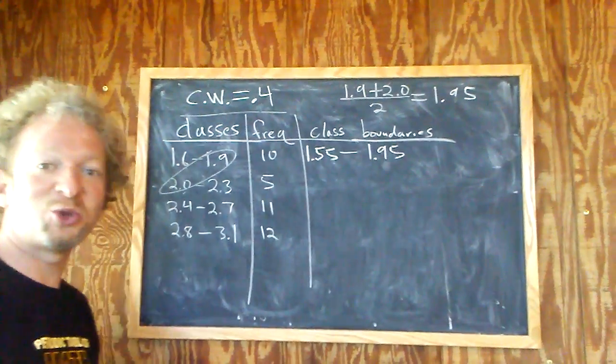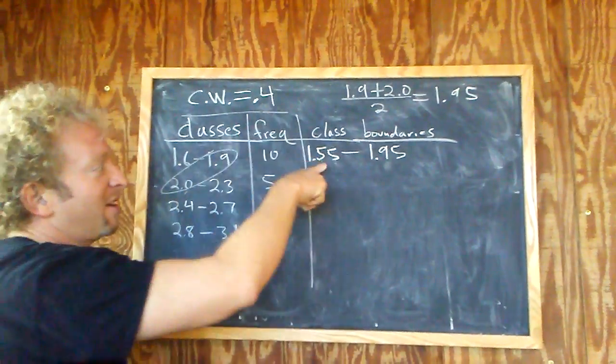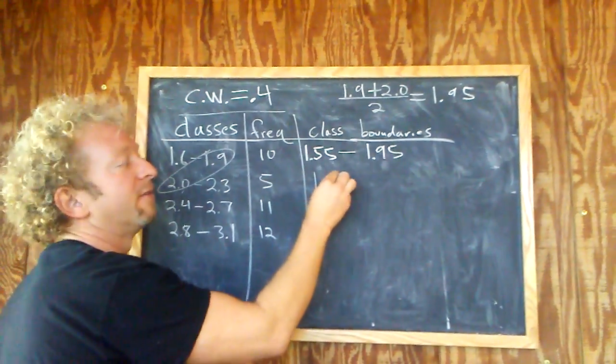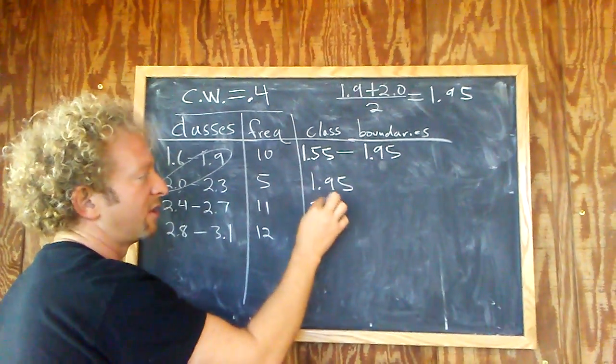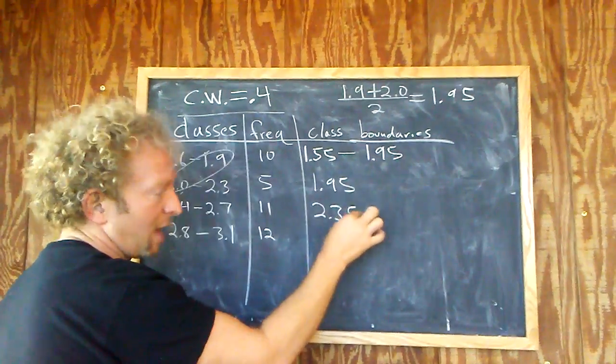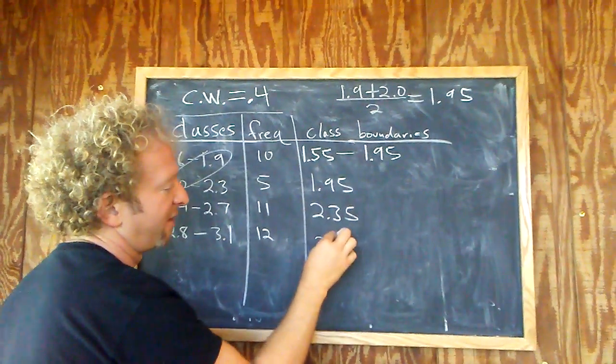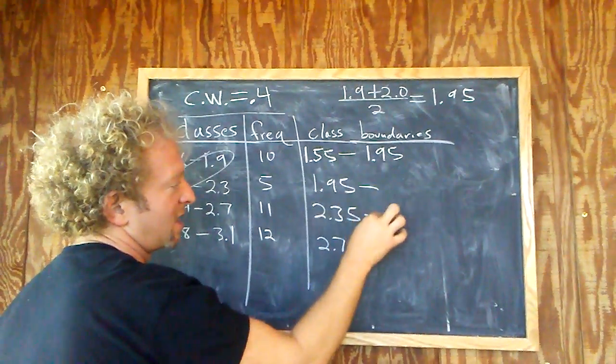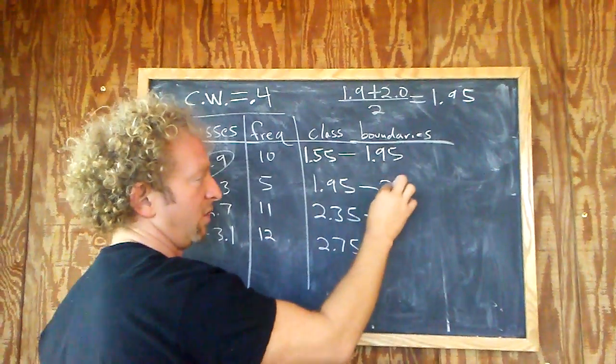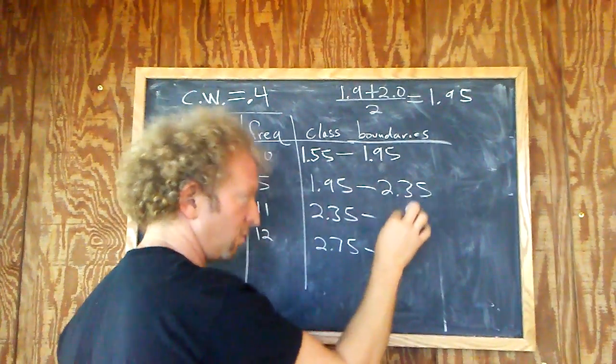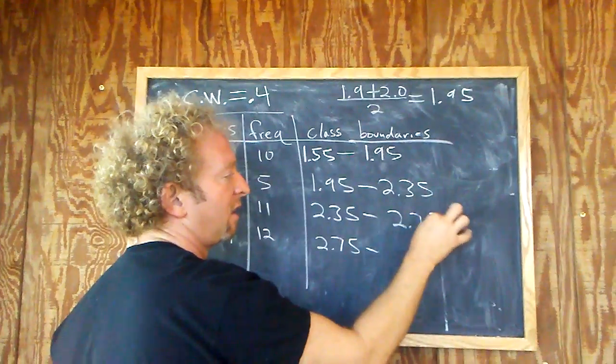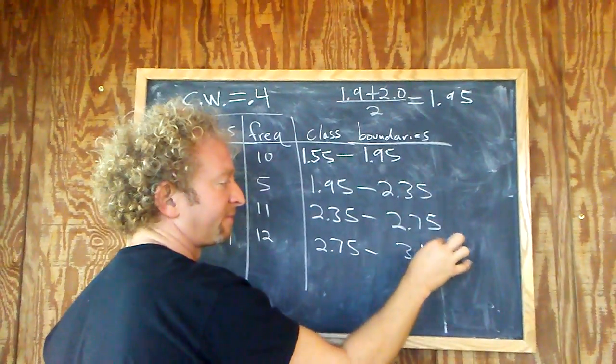And then to get the rest super easy, you just add the class width. So add the class width, you get 1.95. Add the class width, you get 2.35. Add the class width, you get 2.75. Dash, dash, dash. Do the same thing here. 2.35, 2.75, 3.15.